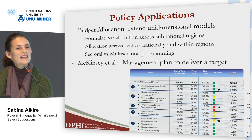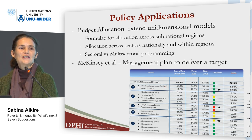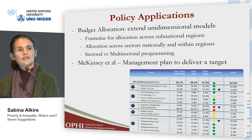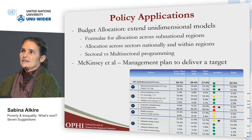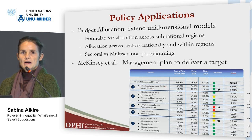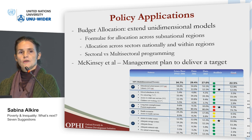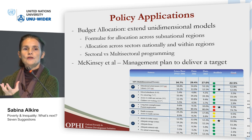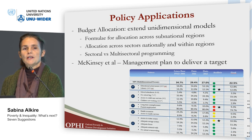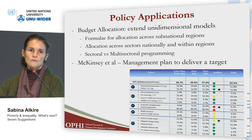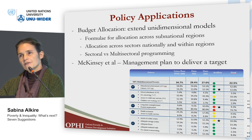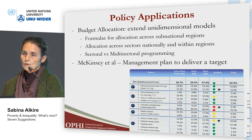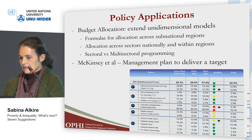At the other end of the spectrum, there are interesting innovations within countries — not only in targeting and monitoring, but also in management. President Santos of Colombia, at the beginning of his term, engaged McKinsey to take that country's multidimensional poverty index, which reflects the national plan, and turn it into a management tool that could track change and realize results within a given time period. That interface between measurement and management might also be explored, bearing in mind the data limitations.